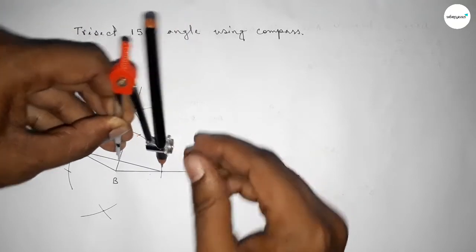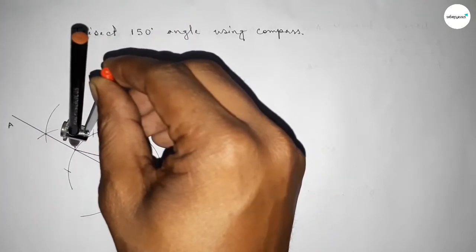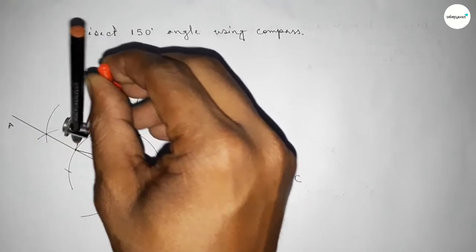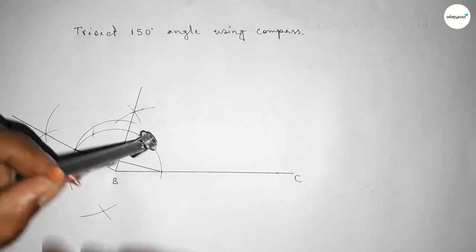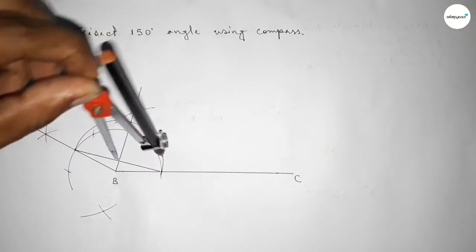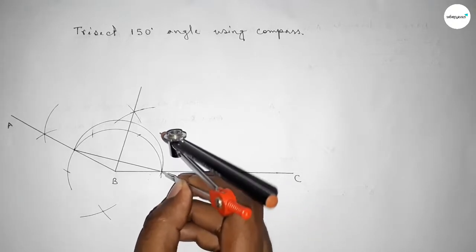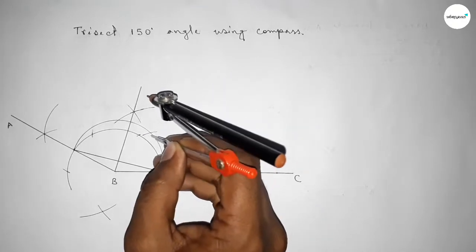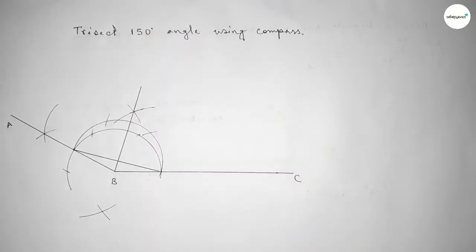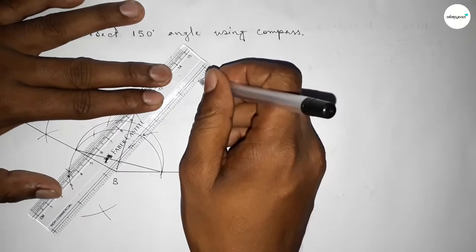Taking the length from this point to this point to draw a semicircle here. Drawing the semicircle by this way. With the same length, putting the compass here and cutting here, and putting the compass here and cutting here. Now joining this line.